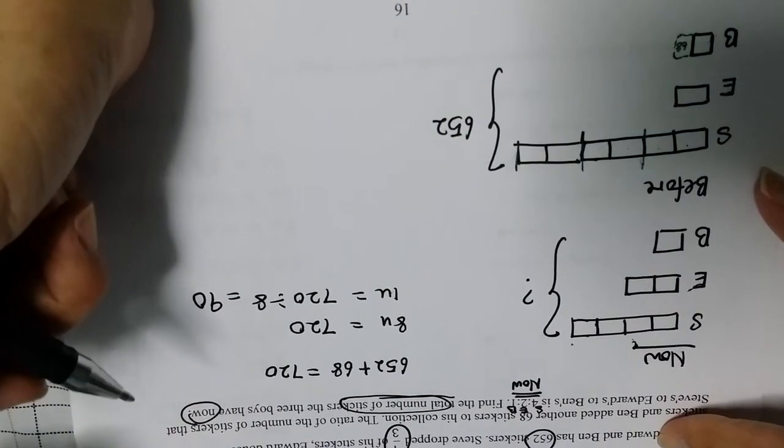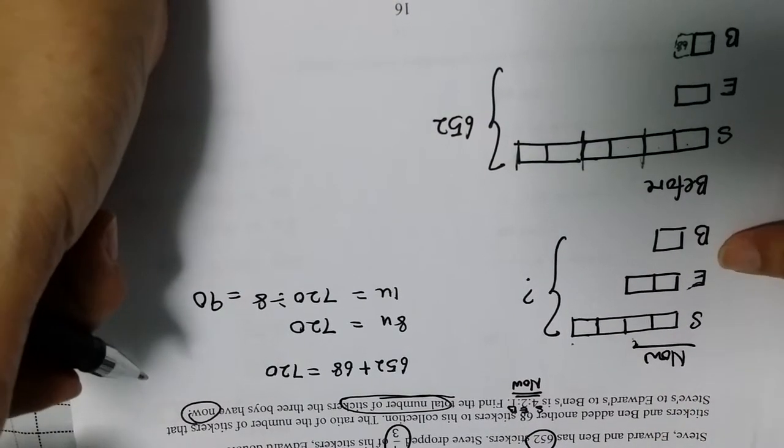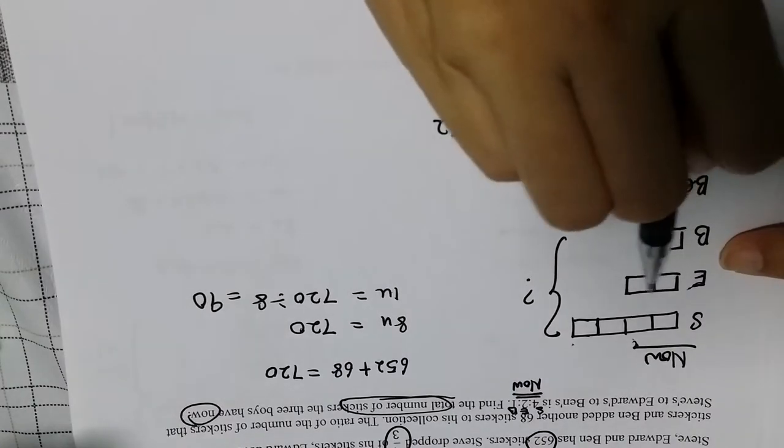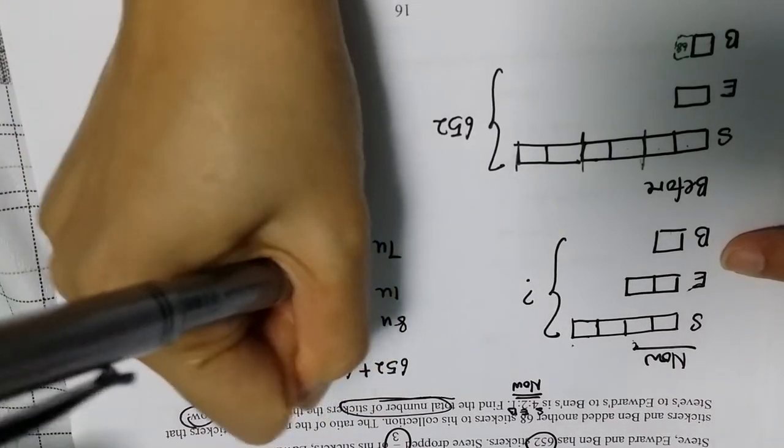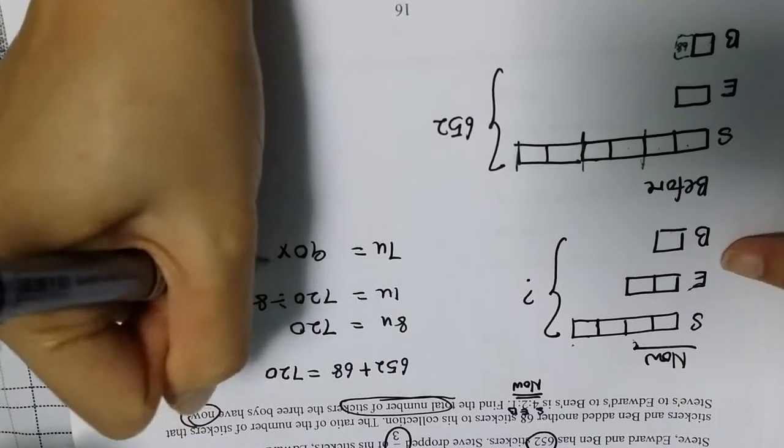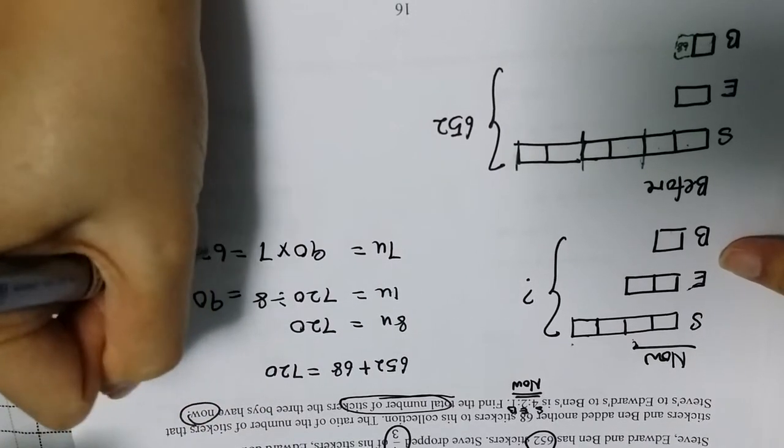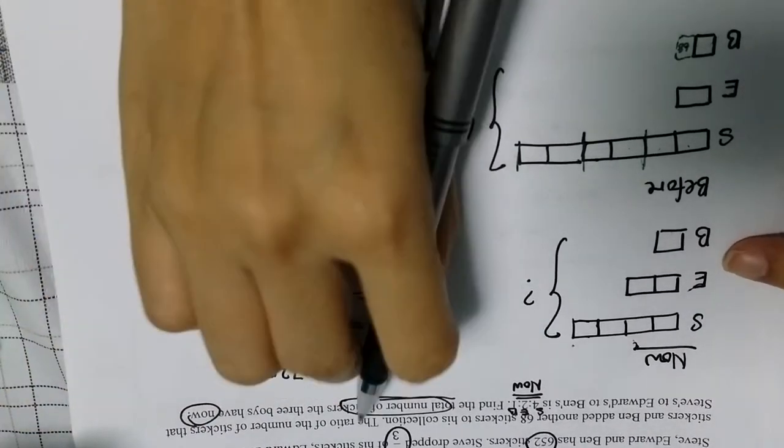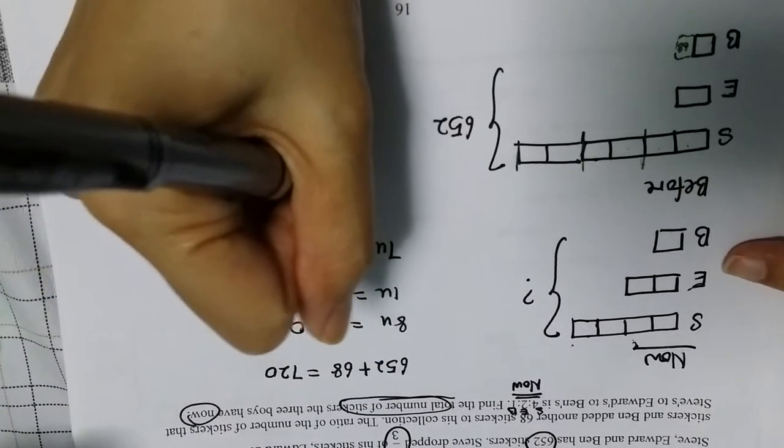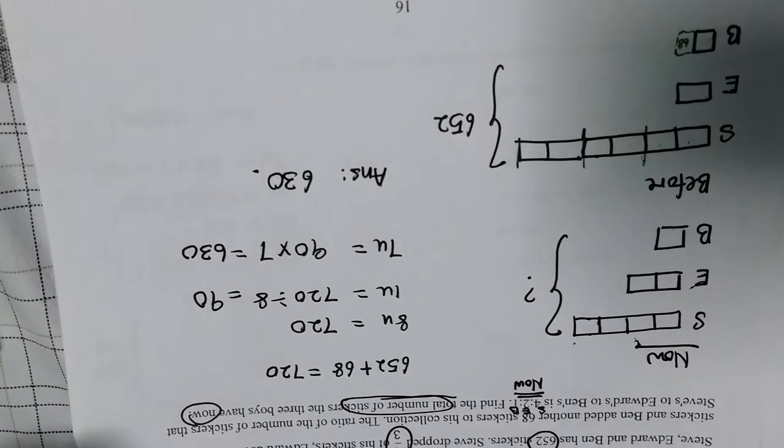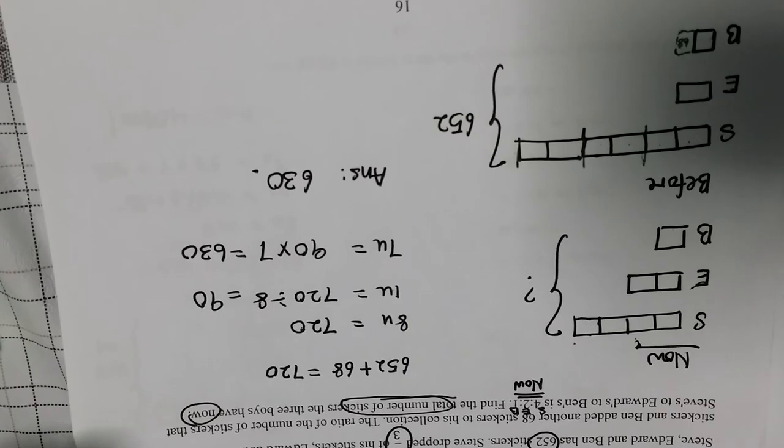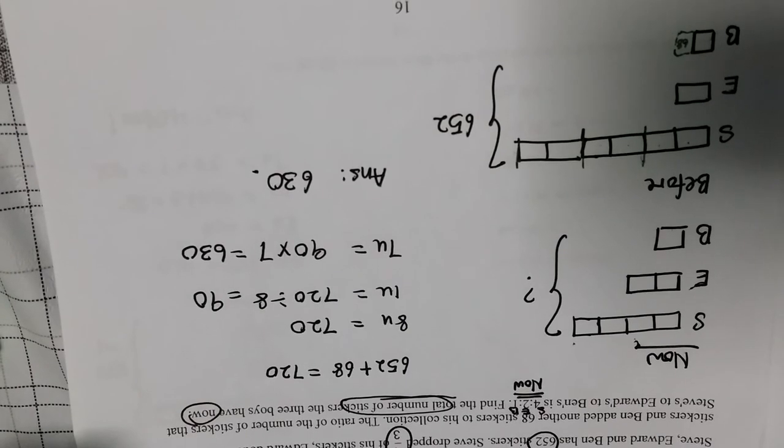And once I find that 1 unit equals to 90, I will move back here. 1, 2, 3, 4, 5, 6, 7. I'm interested to search for 7 unit, which is 90 times 7. And I get this answer. And then they are looking for stickers. So no particular unit. Just write answer 630. So all right, I'm done. I hope you get all correct so that you don't need to view my video. Okay, bye bye.